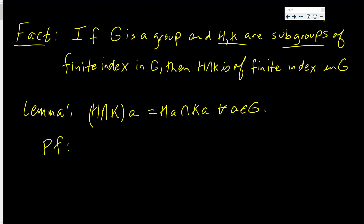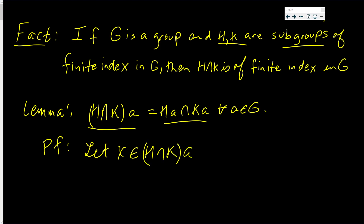The proof. These are two sets and we have to show containment in both directions. So let X be in (H intersect K) times A. Well, this implies that X equals M times A, where M is an element in H intersect K.